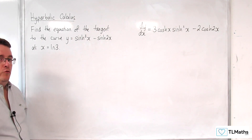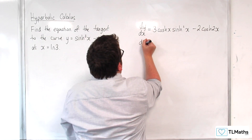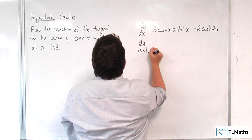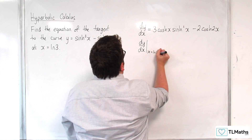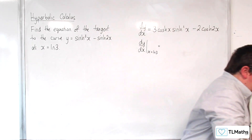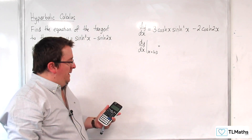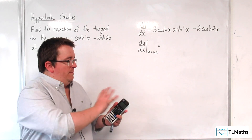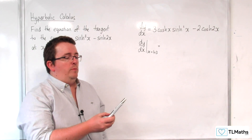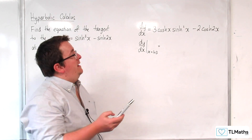So that's our derivative, and we can evaluate it at x equals ln(3). Now remember on your calculator — on the ClassWiz, for example — if you're in the main calculator mode, just go to option and then number 1, you get hyperbolic functions, and so you can substitute them straight in.